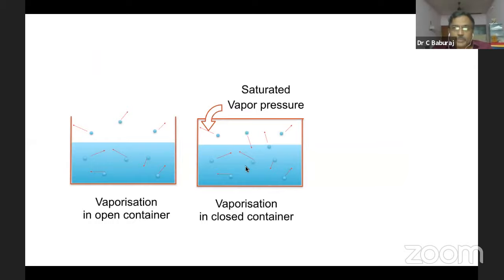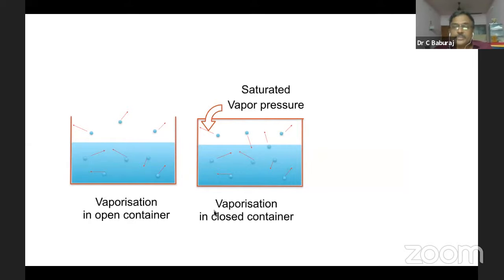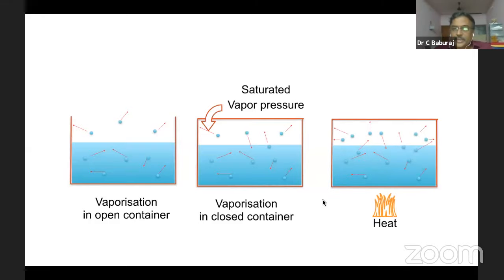Whenever you say saturated vapor pressure, suppose I say SVP of halothane is 243 — it is meaningless if I'm not mentioning the temperature. I should say SVP of halothane is 243 at 20 degrees centigrade, because saturation depends upon the temperature of the liquid. When heat is applied to the liquid, it increases the kinetic energy of the molecule and more molecules escape, exerting more SVP. So whenever SVP is mentioned, mention temperature also.